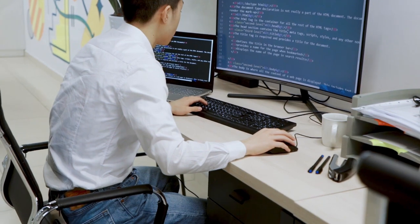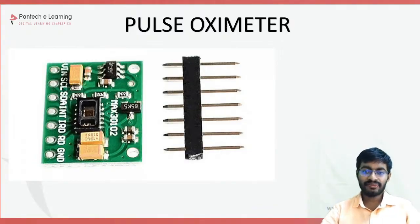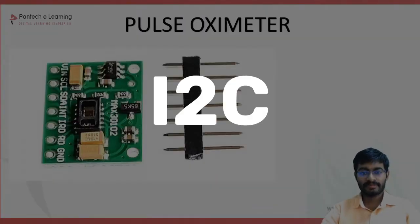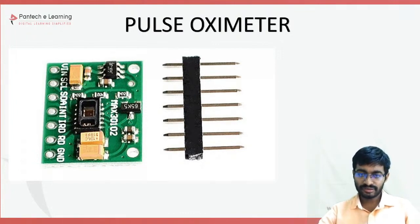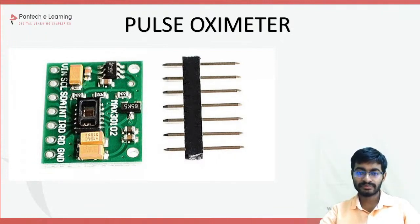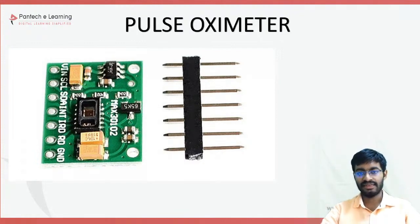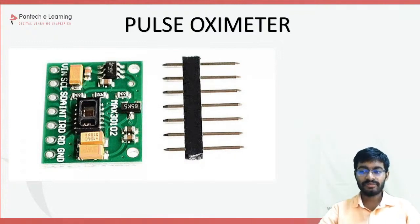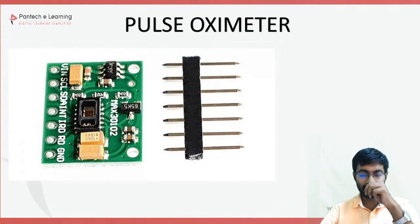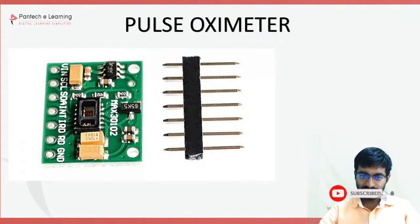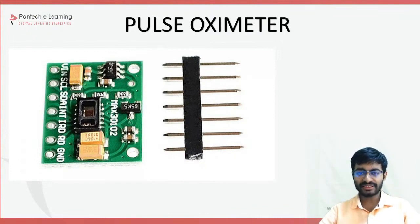The pulse oximeter — SPO2 — completely comes under the section of pulse oximeter, which works in the form of I2C. I2C is commonly said as Inter-Integrated Circuit, meaning within the circuit itself we have another circuit. Here, pulse as well as oxygen level will be applied. Similarly, we have a contactless temperature sensor, which also has two applications: one is IR and another is the temperature sensor.